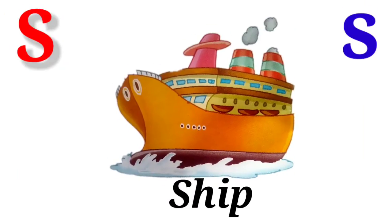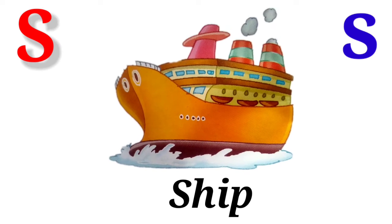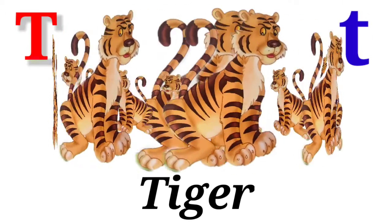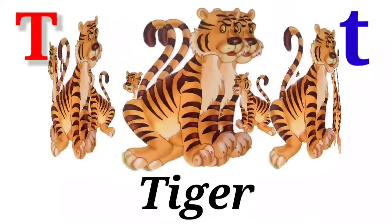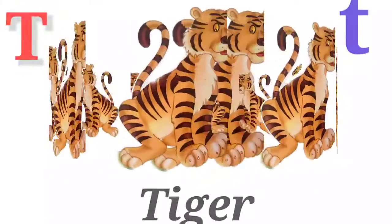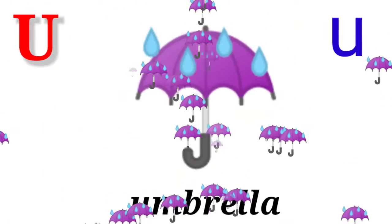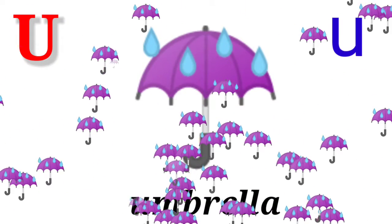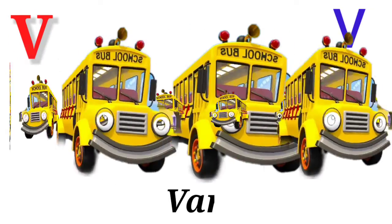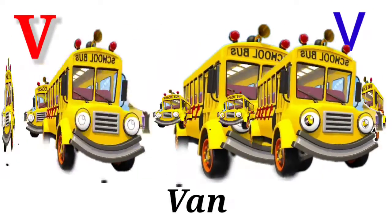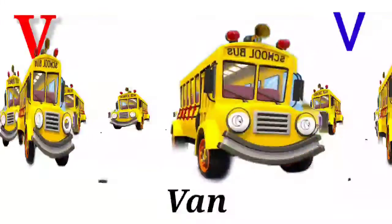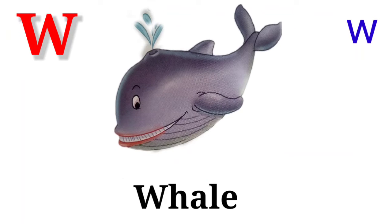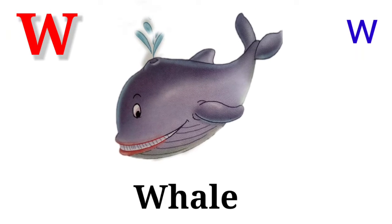S for Sheep. T for Tiger. U for Umbrella. V for Van. W for Whale.